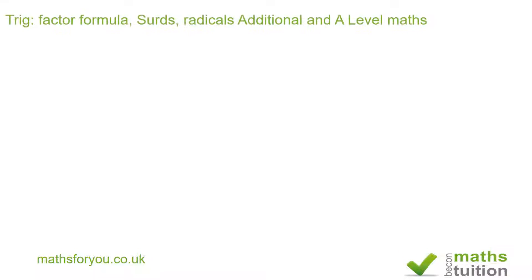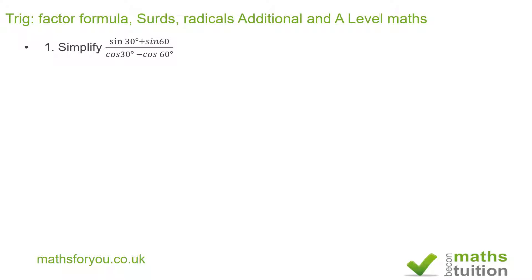Well hello and welcome to this trig revision exercise on factor formula, which also has surds or radicals — an additional A-level type question. It says: simplify sine 30 plus sine 60 degrees, divided by cos 30 minus cos 60 degrees.